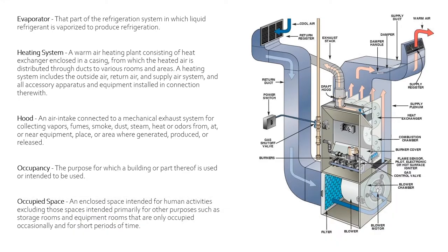Next is occupancy. This is the purpose for which a building or part thereof is used or intended to be used. It's used a lot of times in calculating the amount of airflow or the amount of light a certain area needs, and is predefined by the architect for use in calculations. Next is occupied space — an enclosed space intended for human activities, excluding spaces intended primarily for other purposes such as storage rooms and equipment rooms that are only occupied occasionally and for short periods of time. Occupied spaces would be break rooms, offices, and conference rooms — places where people will be for extended periods — versus a storage closet or electrical room, which aren't occupied spaces.